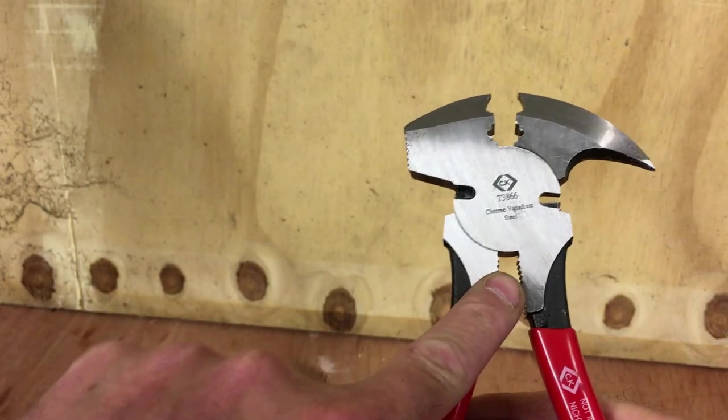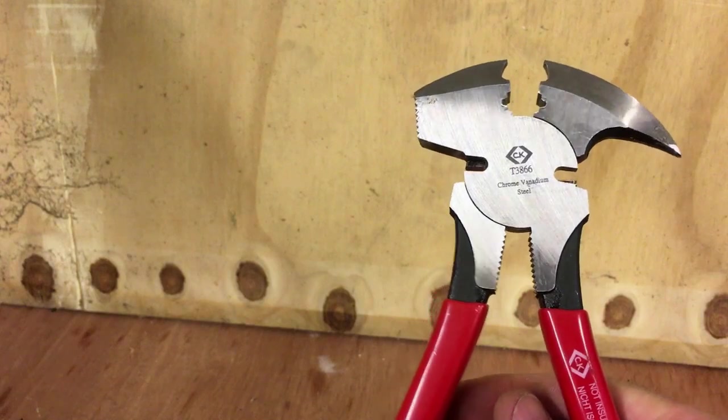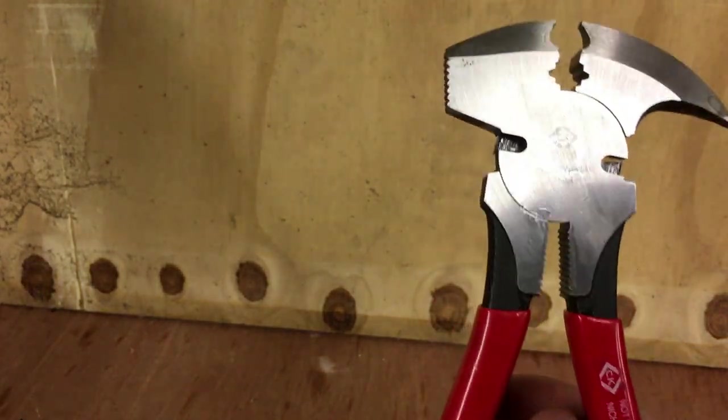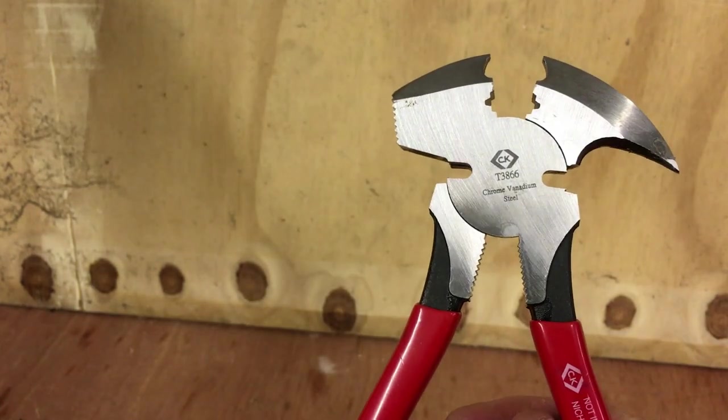We have another set of pliers here, which to be honest I don't really use. Just a set of grips there. And here and here we have the wire cutters.